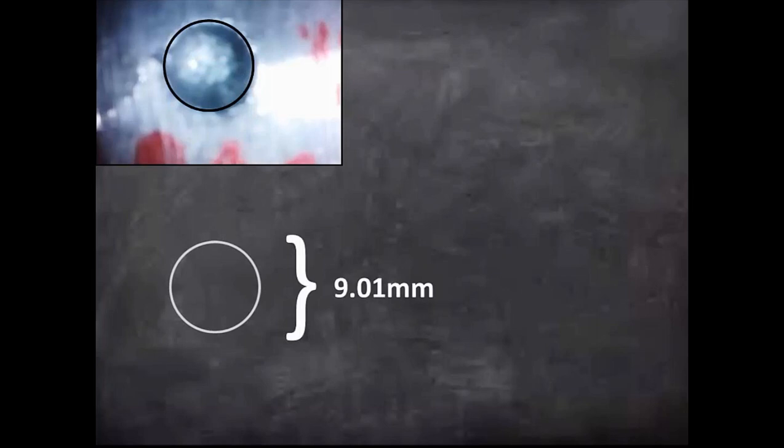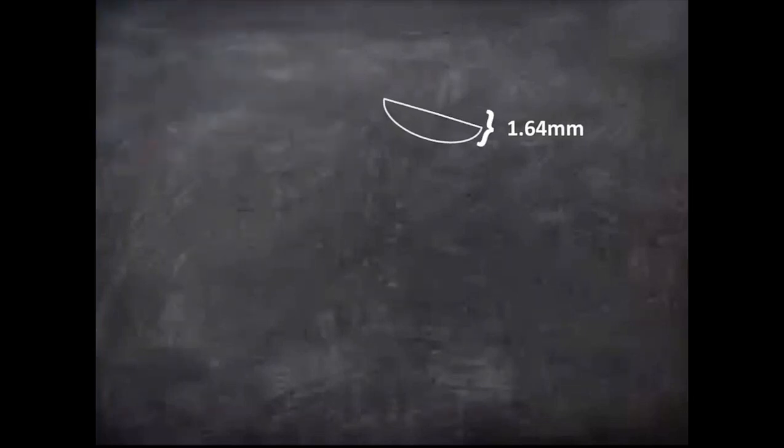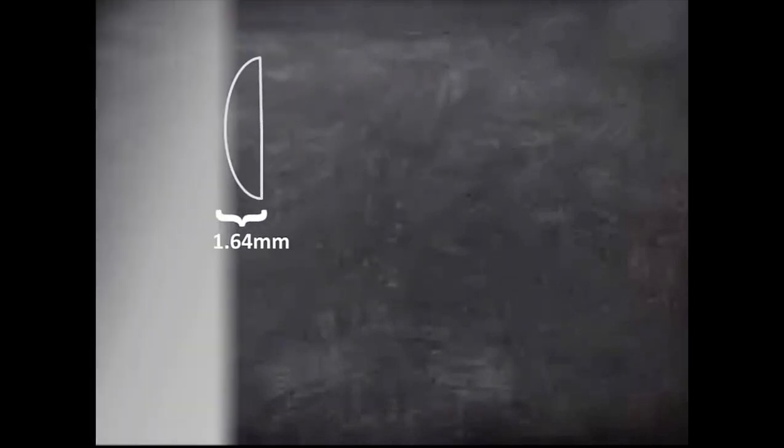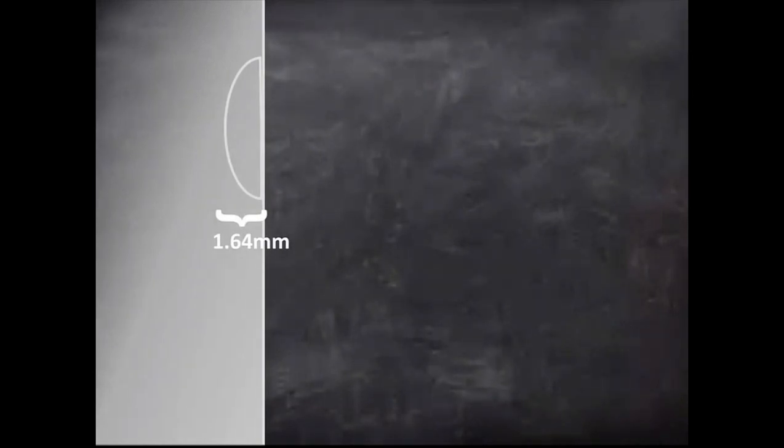The impact crater has a diameter of 9.01 millimeters, but even more important is its depth. The depth is 1.64 millimeters. Why is this second figure so much more important? Well, let's put this back into the context of the plate. This number represents the total depth to which the bullet penetrated. Now let's look at this again with a force diagram.